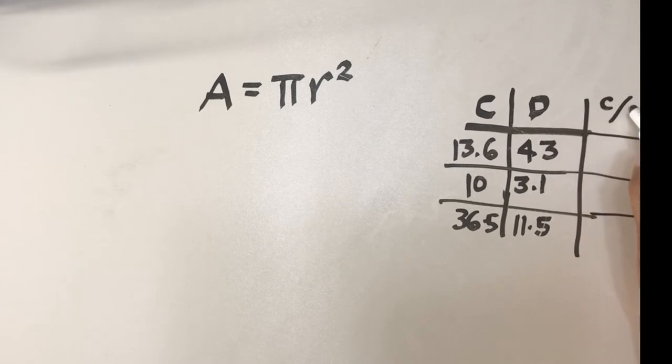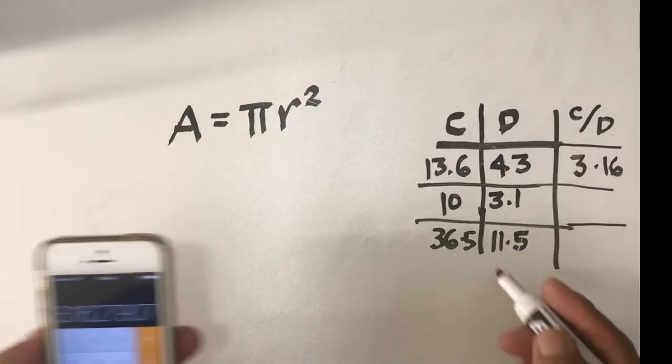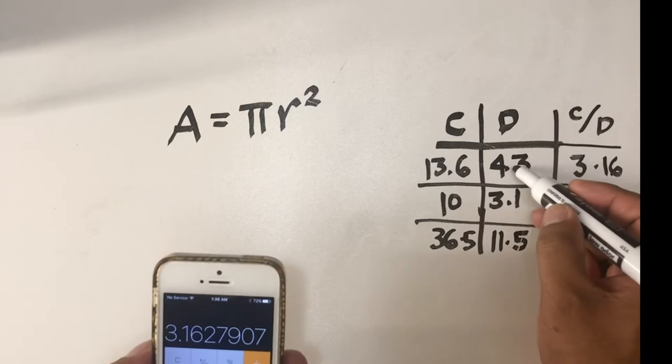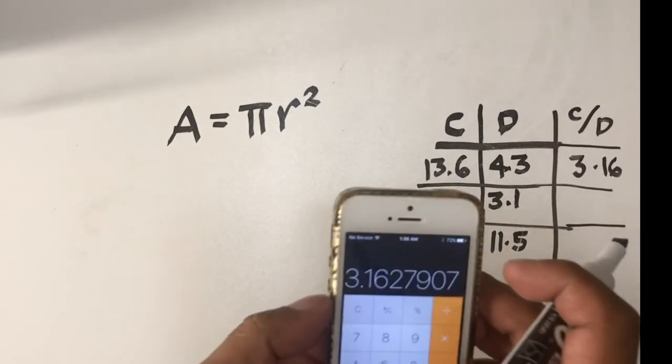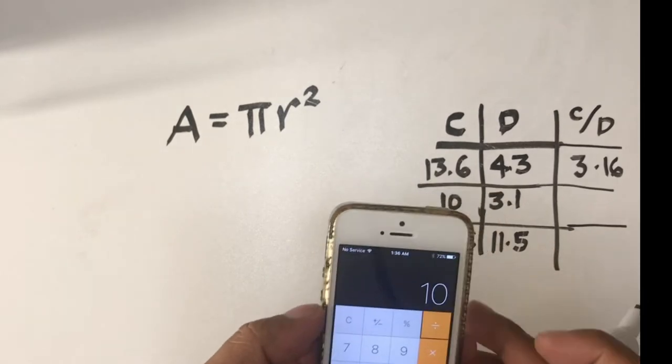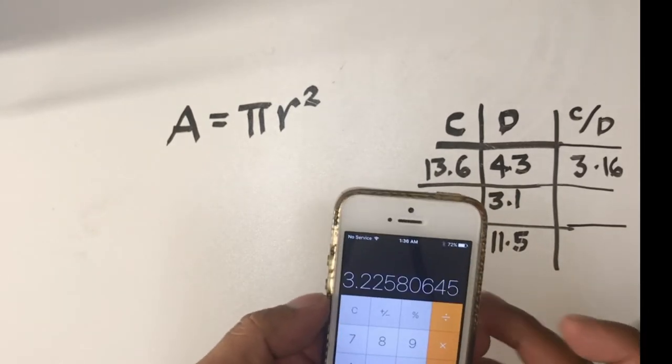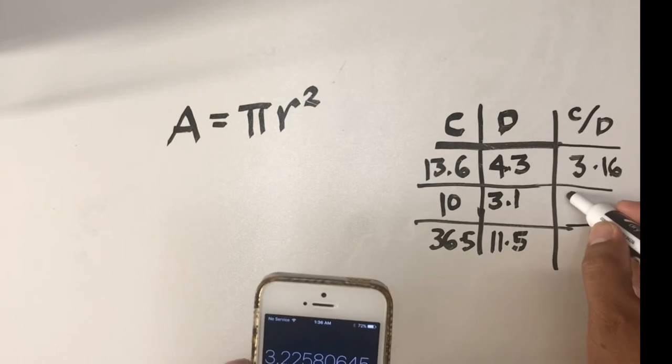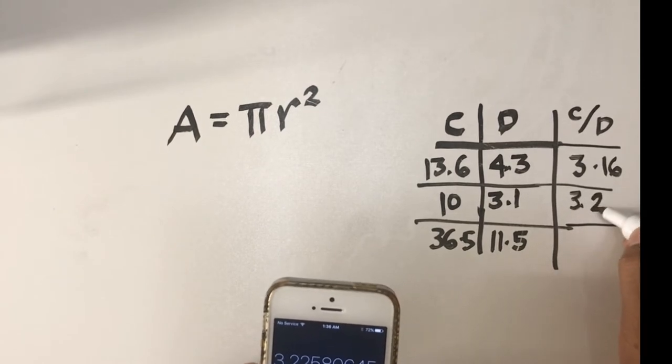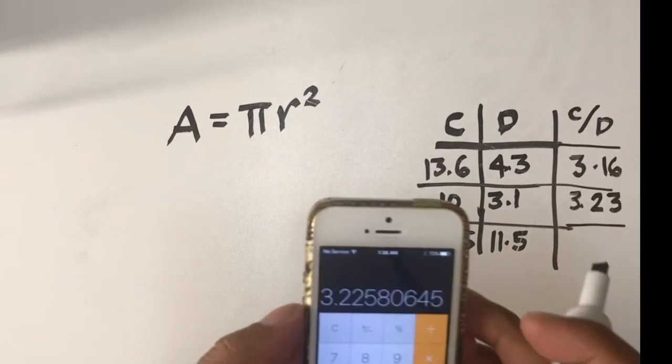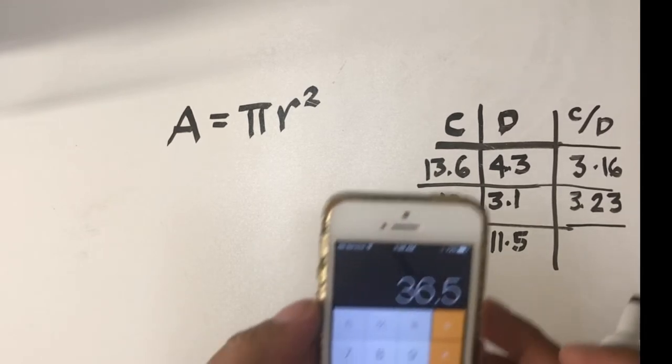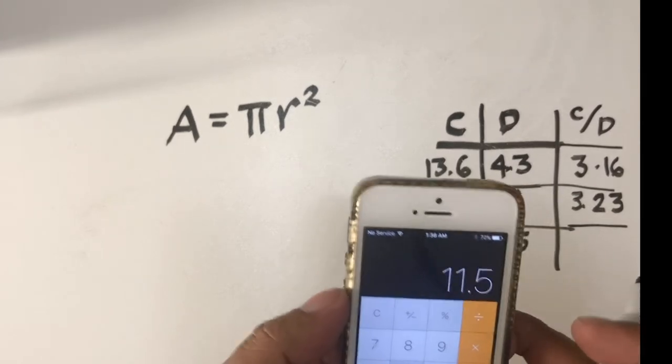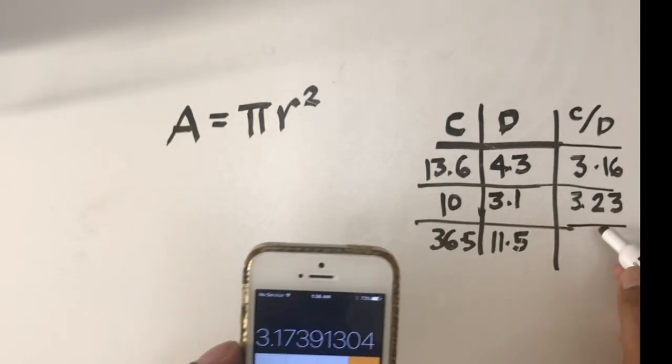Now let's get our calculator and compute for the ratio. C divided by D, so 13.6 divided by 4.3 is 3.16, now 10 divided by 3.1 gives us 3.23, and 36.5 divided by 11.5 equals 3.17.